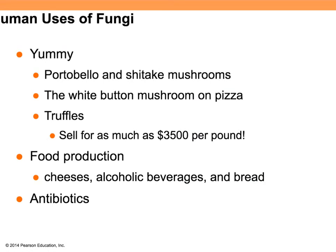Sometimes fungi are delicious. As humans, we eat portobello mushrooms, white buttons, and truffles — which can sell for up to $3,500 a pound. We also use fungi in a lot of food production: certain cheeses, alcoholic beverages, and breads all rely on fungi. Finally, antibiotics can come from fungi — the classic example is penicillin, which comes from the fungus Penicillium. Fungi are notorious for making antimicrobial compounds, and we've learned to utilize those to our advantage.